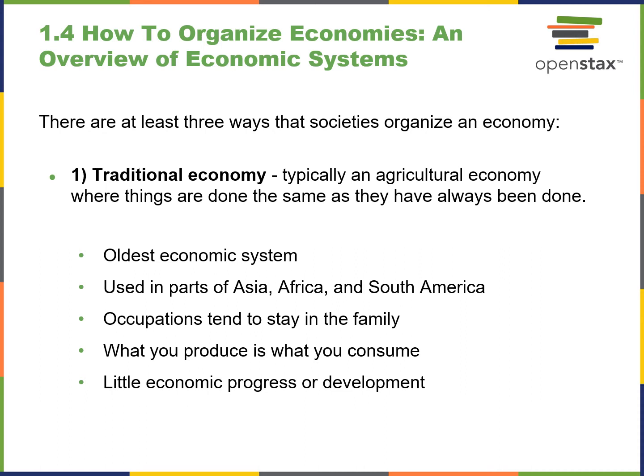How to organize economies: there are three economic systems. A traditional economy is typically an agrarian economy — the oldest known system, still used in parts of South America, Africa, and Asia. Occupations tend to stay in the family, like blacksmiths passing the trade through generations. What you produce is what you consume. There is little economic progress or development because there's not a free flow exchange of ideas.